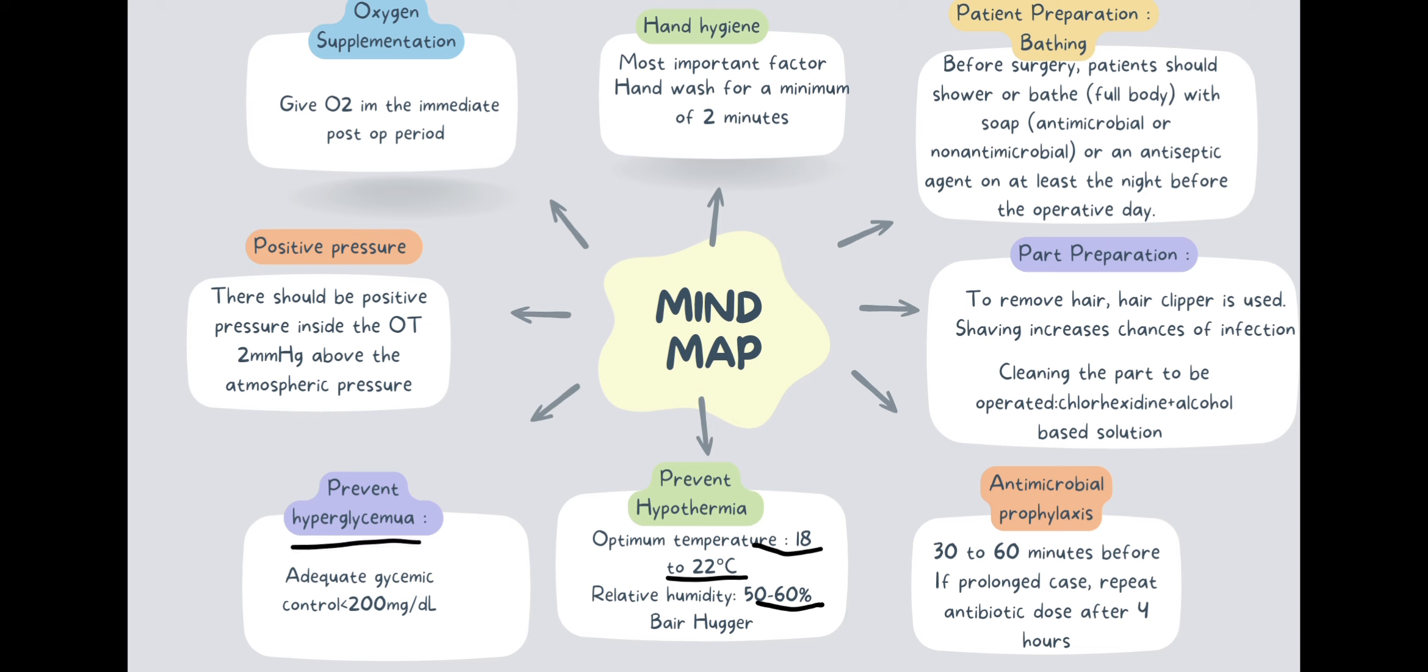Hyperglycemia also has to be prevented. We have to maintain adequate glycemic control of less than 200 mg per deciliter.